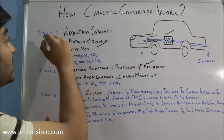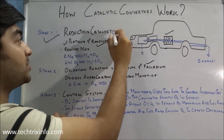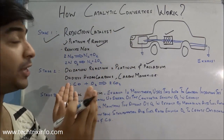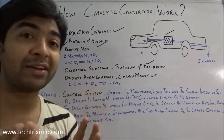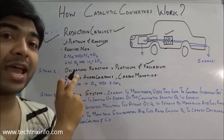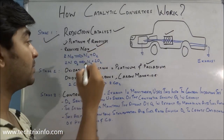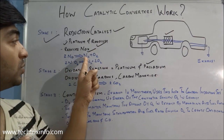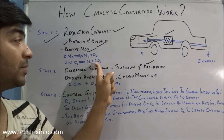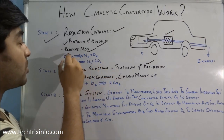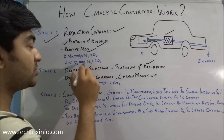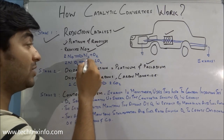Stage one is a reduction catalytic reaction where platinum and rhodium play their part. They reduce the amount of NOx — nitrous oxides — coming out of the exhaust. Nitrogen oxide (NO) and nitrogen dioxide (NO₂) are the NOx compounds. 2NO is reduced to N₂ plus O₂, and 2NO₂ is reduced to N₂ plus 2O₂. So the nitrogen oxides are reduced into nitrogen and oxygen.